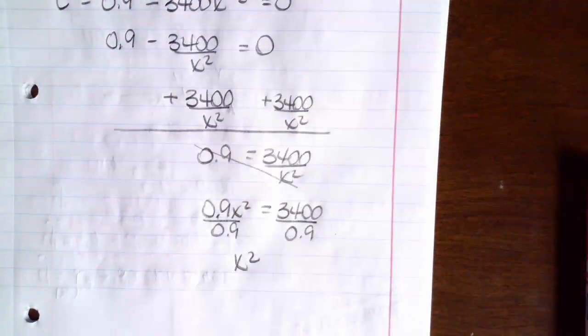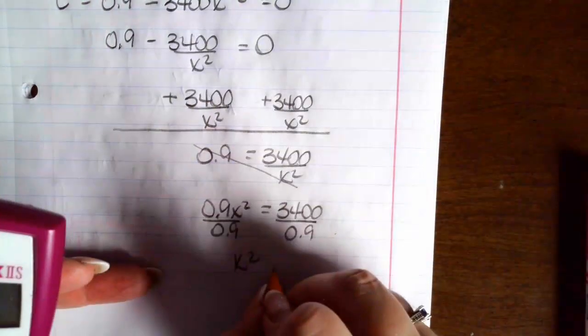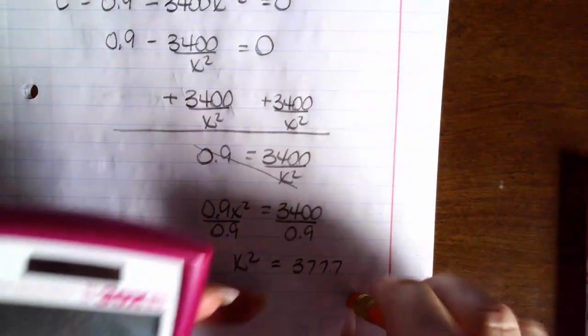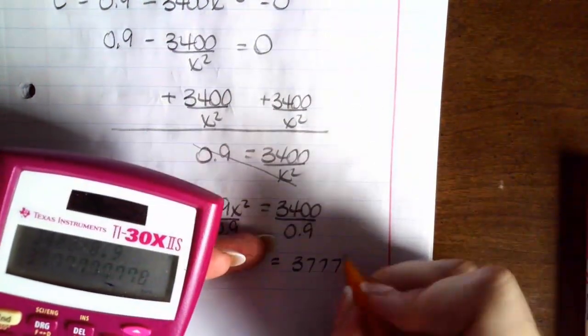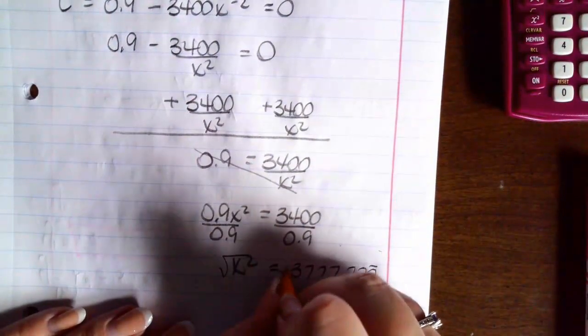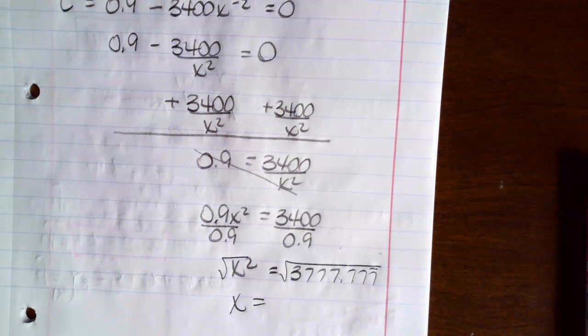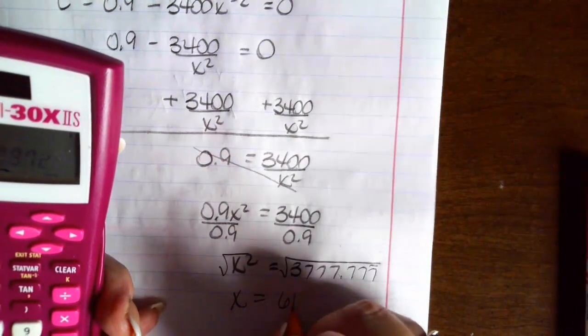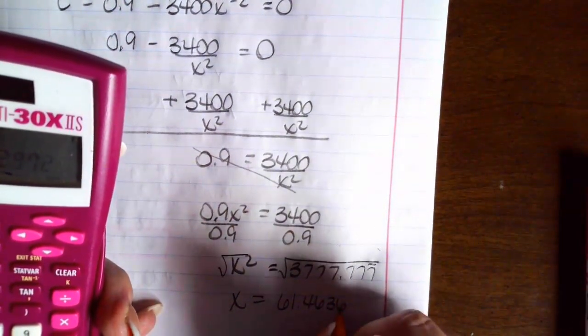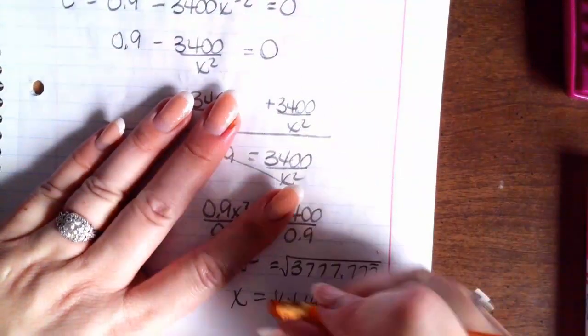So x squared is 3,400 divided by 0.9 is 3,777.7. It's a lot of sevens. Okay, take a square root and you get x is, so we're going to raise that to the one half power and we get 61.46. Oops, sorry. That's supposed to be a plus minus.